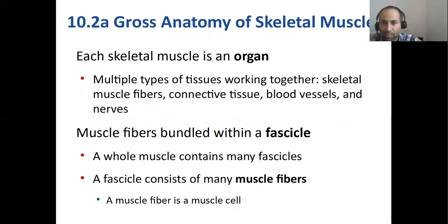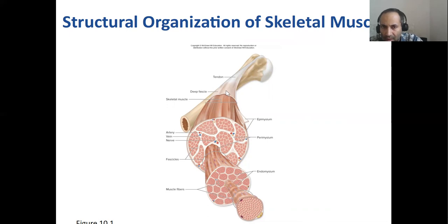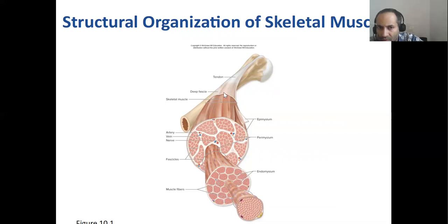Each skeletal muscle is considered an organ because it contains muscle cells, blood vessels, sensory nerves, and connective tissue. In a cross-section, here's the bone to which the muscle is attached — hence it's called skeletal muscle. The connective tissue called tendon connects muscle to bone. The entire bundle of muscle is covered on the outside by a membrane called the epimysium. Within that big bundle, you have individual compartments called fascicles, each surrounded by the perimysium. Within those individual fascicles are individual muscle fibers, each surrounded by what is called the endomysium. So three different protective layers: epimysium, perimysium, and endomysium.